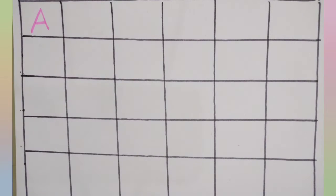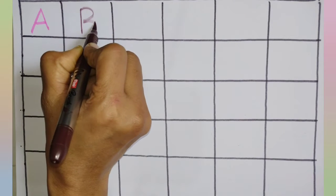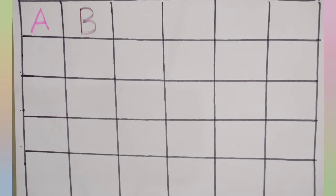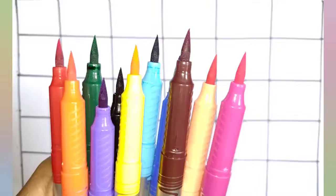This is a pink color, A, A for apple. This is a brown color, B, B for ball. This is an orange color, C, C for cat.